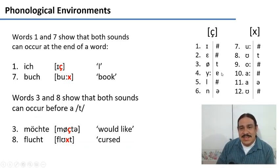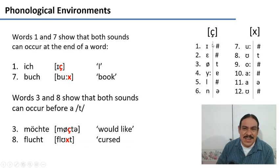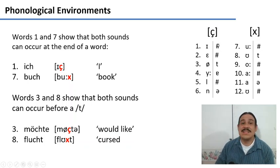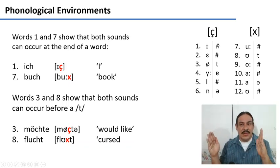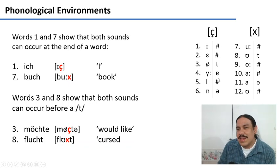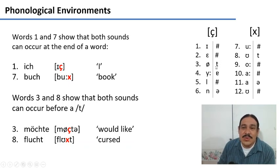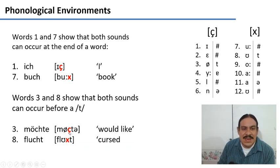If we look at the right side of the environment, we see that they share practically everything. Words one and seven show that both of these sounds can occur at the end of the word, so this cannot be what distinguishes one from the other. Words three and eight further reinforce the idea that the right side is not where the difference is, because we see the phoneme T on the right side of both the palatal and the velar one, as in Müschte and Flucht. So both sounds can have a T coming right after them — that cannot be what distinguishes between the two.